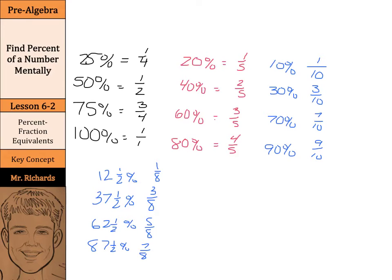Our last set, 16 and two thirds percent, 33 and a third percent, 66 and two thirds percent, and 83 and one third percent. Now these are our sixths. So the first one is one sixth, the next one is two sixths, which is one third. Three sixths was the one half, so that's 50 percent, but next would be four sixths, which simplifies to two thirds, and then five sixths.